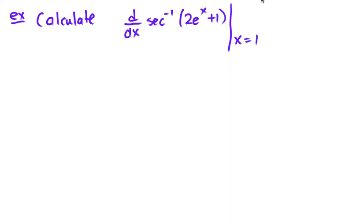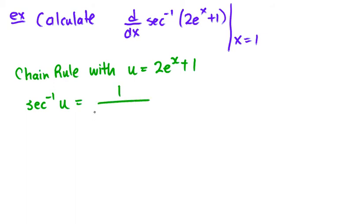So, we're going to use the chain rule with u equaling 2x plus 1. And secant inverse of u, we can know is 1 over the absolute value of u times u squared plus 1.